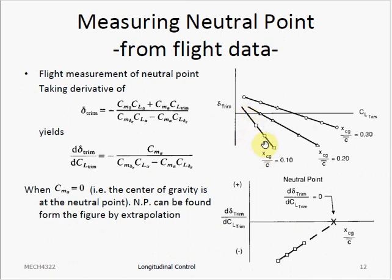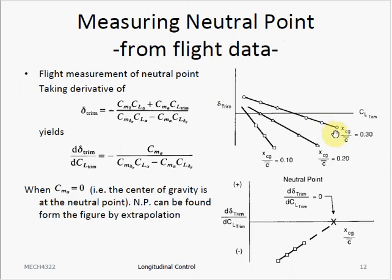Here is an example graph showing that flight experiment. This is a graph of the aircraft flown at a center of gravity of about 10% of the mean aerodynamic chord, recorded at multiple trim conditions with multiple delta_trim and CL_trim values. It has then been flown again with the center of gravity at about 20% mean aerodynamic chord, and again at about 30% mean aerodynamic chord. The slopes of each of these graphs are then plotted on a d_delta_trim/dCL_trim versus center of gravity graph, and we can estimate the neutral point by extrapolating this graph.